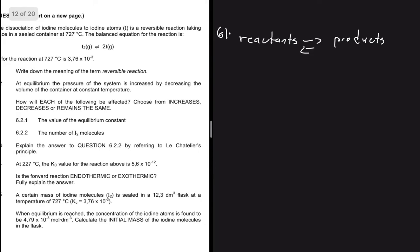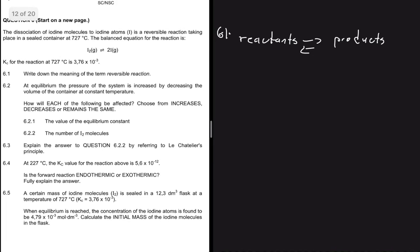Question 6.2: at equilibrium, the pressure of the system is increased by decreasing the volume of the container at constant temperature. For 6.2.1, the value of the equilibrium constant — we know that the only thing that can change the equilibrium constant is temperature. So the answer is: remains the same.